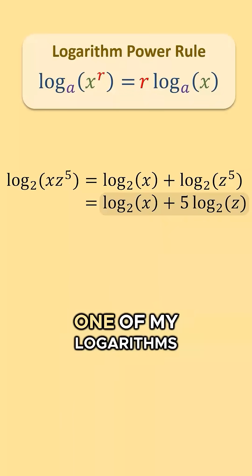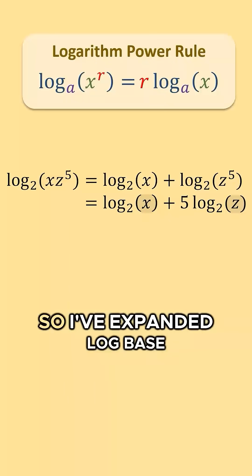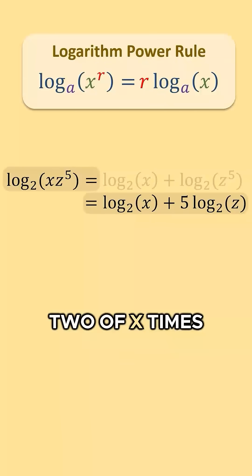At this stage, I look within each one of my logarithms and I think about whether I could use a rule to simplify or expand it more. It seems like I can't at this point, so I've expanded log base 2 of x times z to the fifth power to the best of my ability.